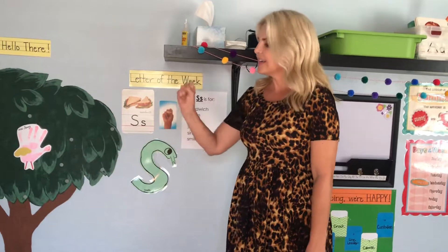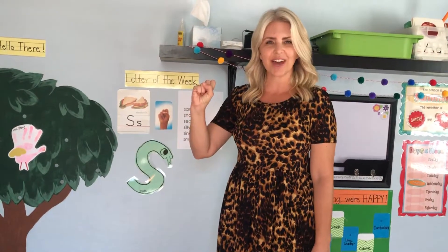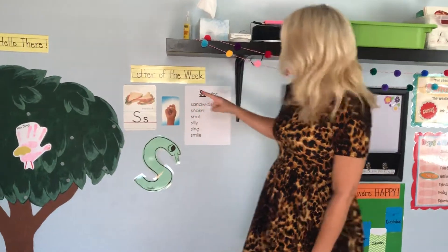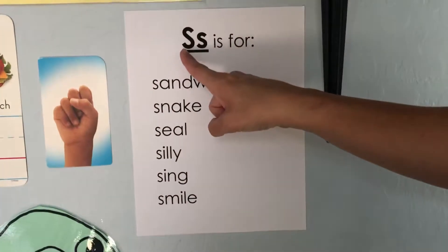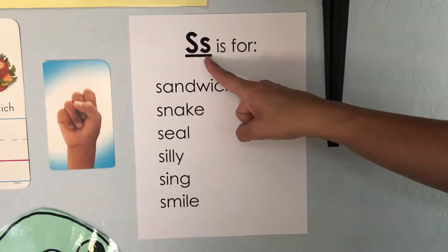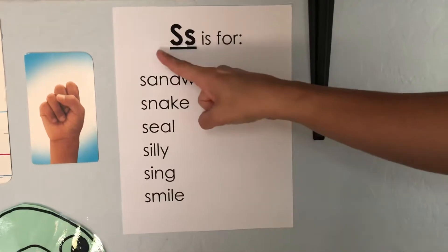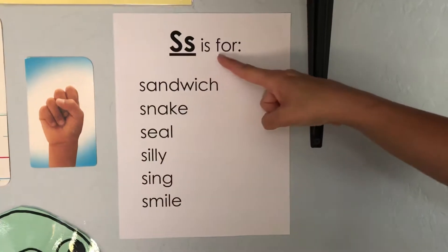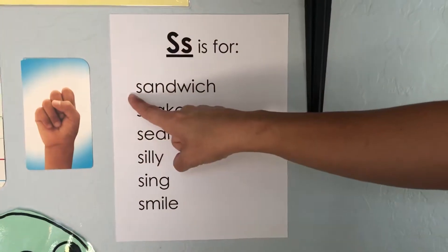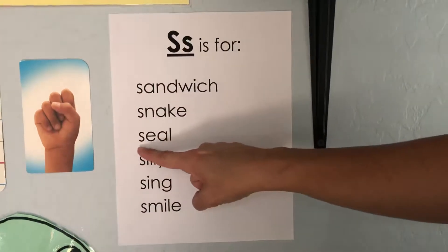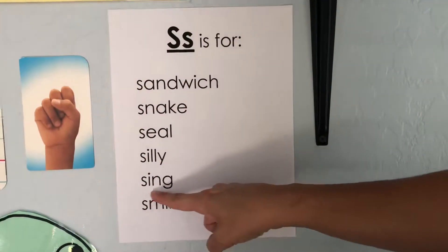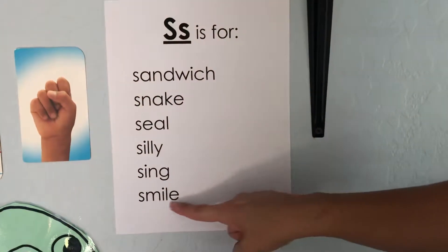This is the sign for the letter S. These are some of the words that begin with the letter S. There's the capital, there's the lowercase. S is for sandwich, snake, seal, silly, sing, smile.